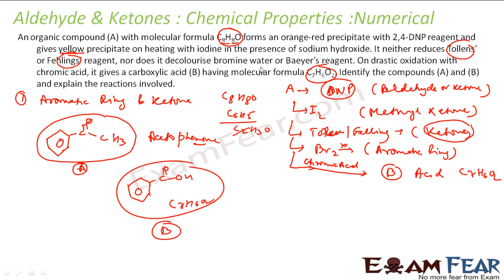To summarize our approach: from the first data point, DNP test showed it is either an aldehyde or a ketone. From the second data point, the iodoform test showed it is a methyl ketone. From the third data point, Tollens'/Fehling's confirmed it is a ketone. From the bromine water result, we found it is an aromatic ring. Combining these with formula C8H8O, the compound is acetophenone.